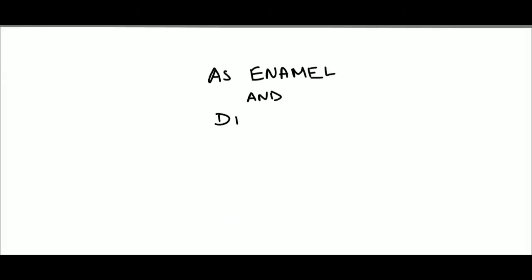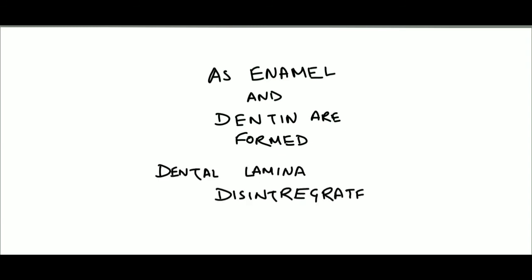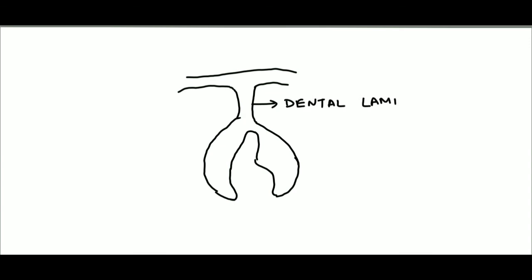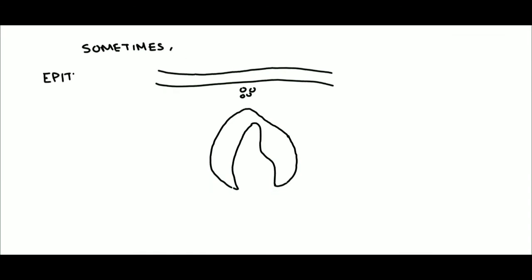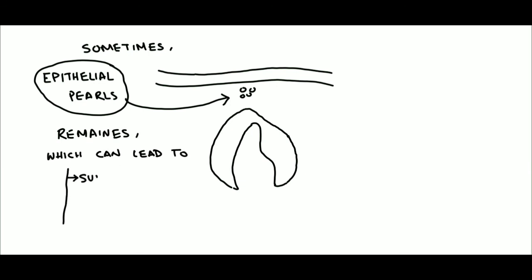As the enamel and dentin are formed, the dental lamina starts to disintegrate, shrinking and leaving behind nests of epithelial cells, sometimes known as epithelial pearls. The remnants of the dental lamina can lead to abnormalities like supernumerary teeth, odontoma, and eruption cysts.